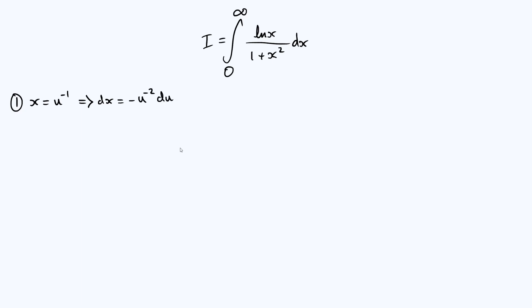Okay, so let's do the substitution. So our integral, which I've defined as i, is going to be, let's think about the limits in a second once we've dealt with the integrand. So we're going to get the natural log of x, which is u to the minus 1 now, and the bottom is going to be 1 plus u to the minus 2. dx we can just write as minus u to the minus 2 du, as we showed above.